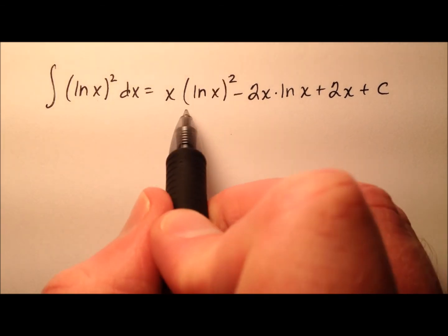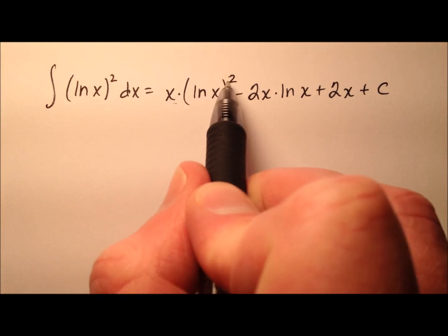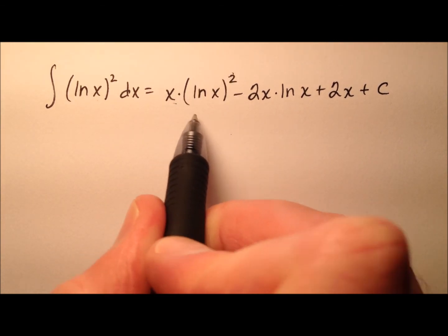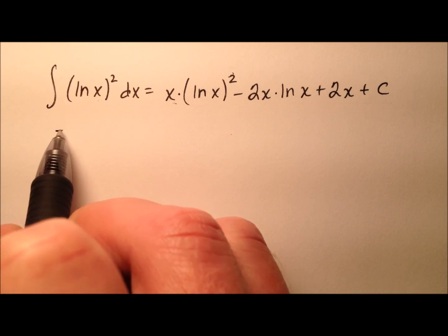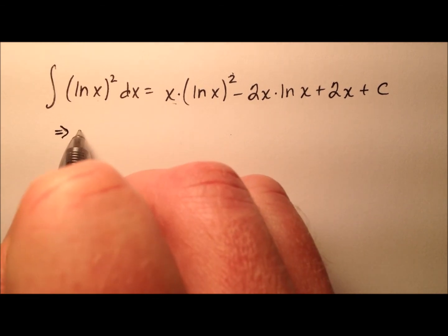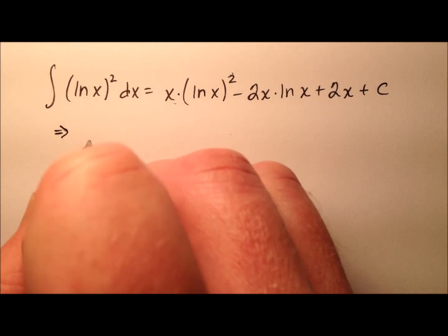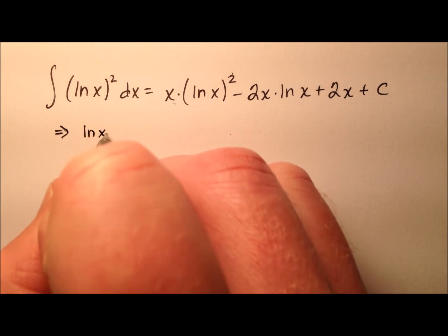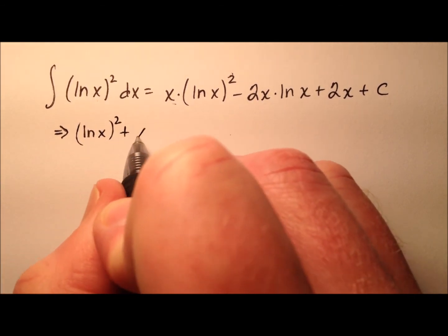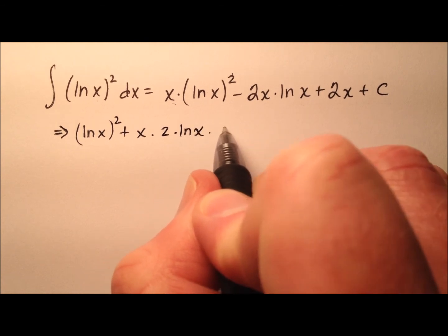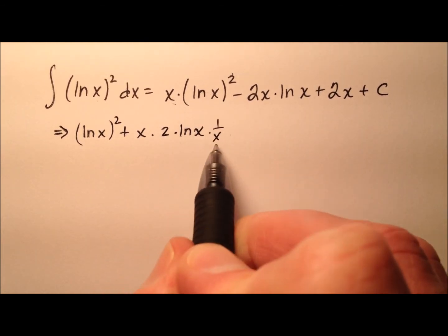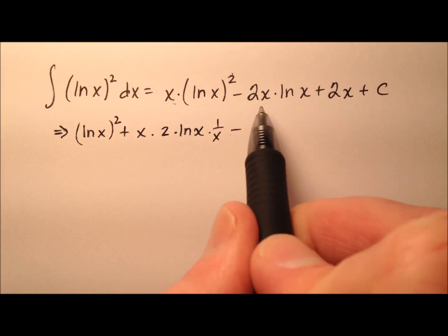Well we got a few things going on here. We have the product rule here and then the chain rule inside here. So let's do the derivative of the first, which is just x. So it's going to be 1. So it's just the ln of x squared plus x times 2 times the ln of x times the derivative of the inside. So 1 over x minus,